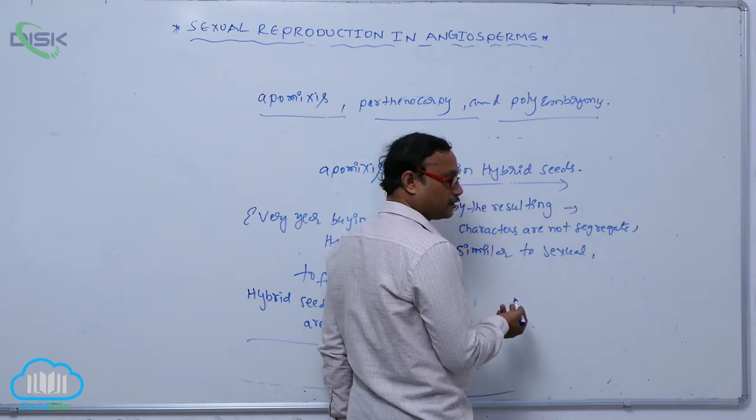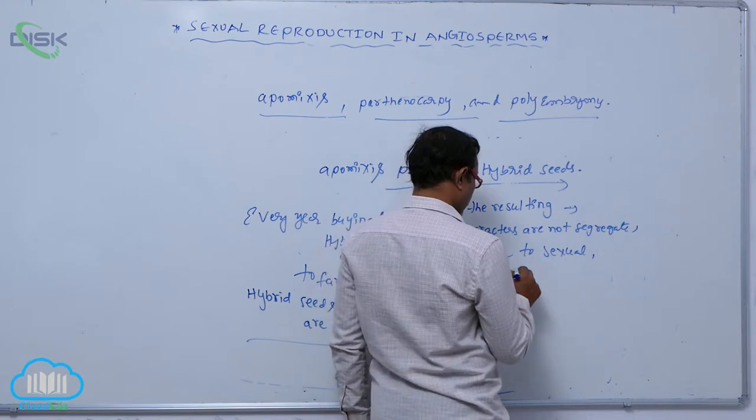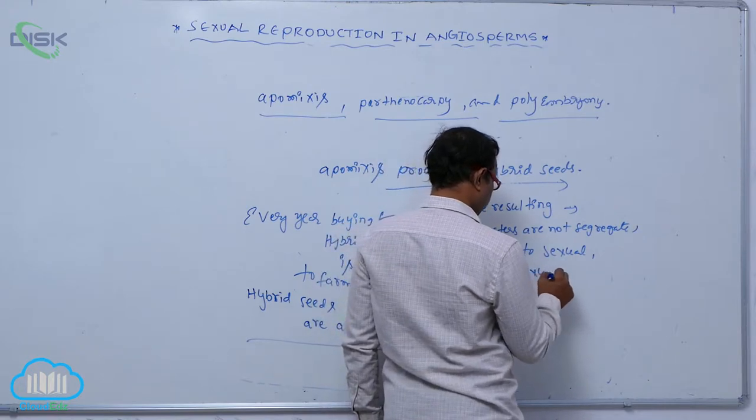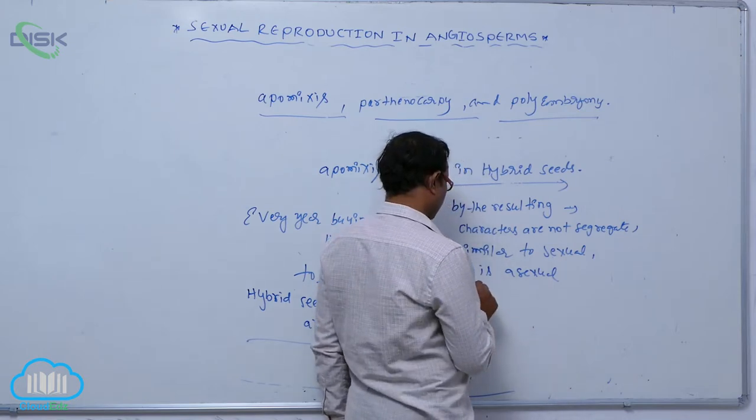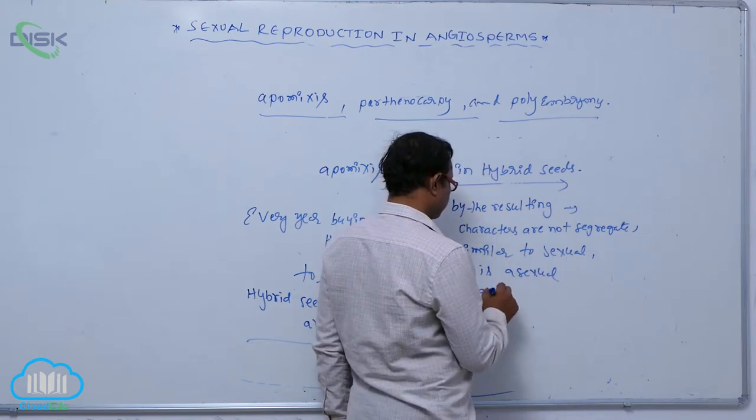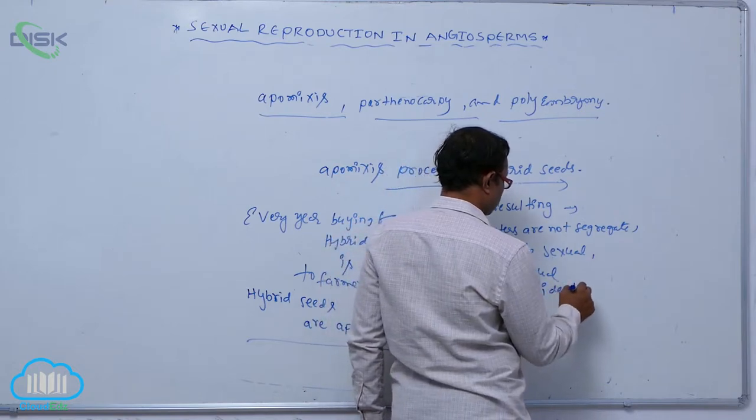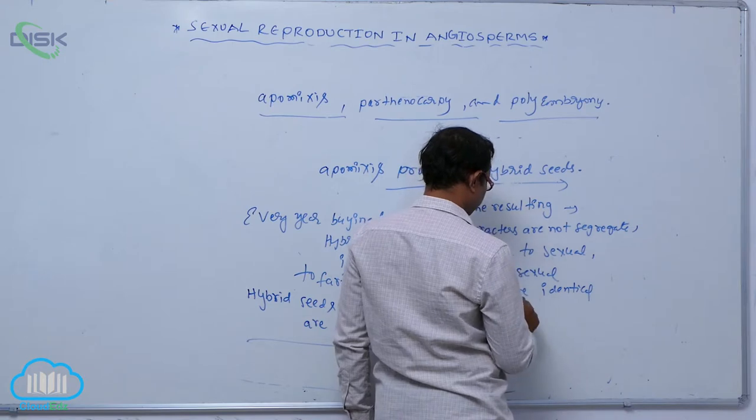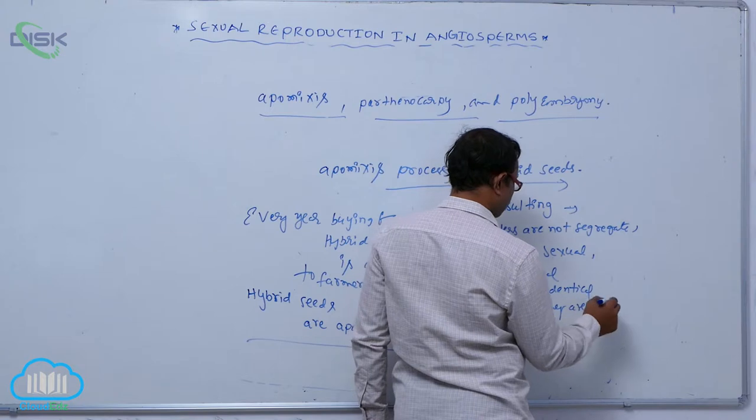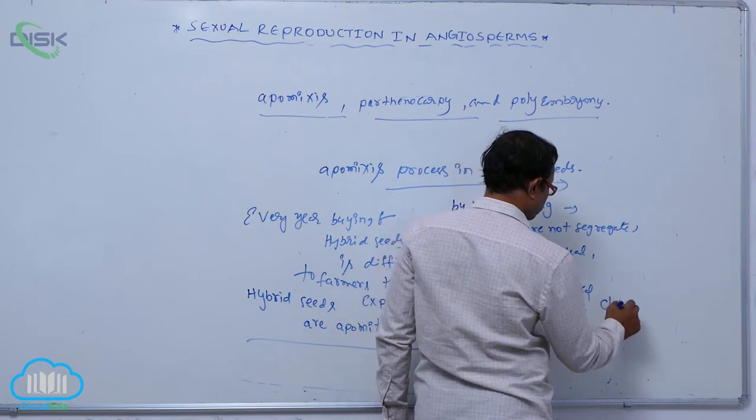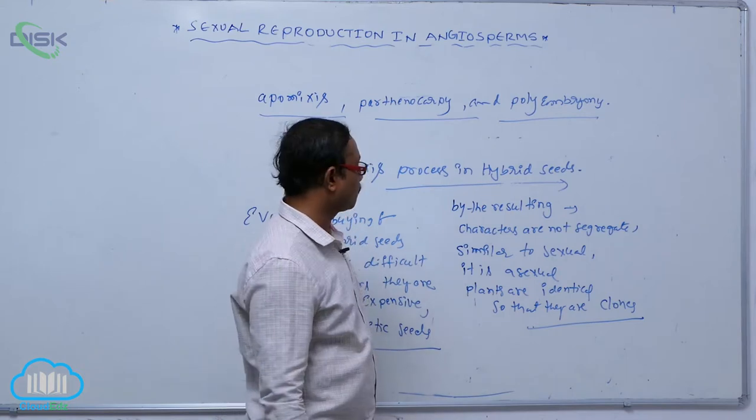Formation of seed - that is known as apomixis. It is asexual, producing identical copies of the plant. That's why plants are identical, so they are clones formed from asexual reproduction. It is one type of vegetative reproduction process.